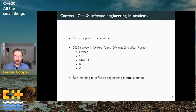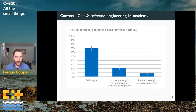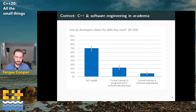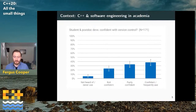However, training in software engineering is really not very common in academia. Of the people we surveyed who identified themselves as software developers, we asked how they obtained the skills they need for their work. The overwhelming majority — more than 70% — were self-taught. Only just over 20% had formal training in software development, and then a tiny fraction had any formal training in software engineering.